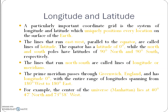Longitude and latitude is one of the most important representations of a grid. A particularly important coordinate grid system is longitude and latitude, which uniquely positions every location on the surface of the Earth. If I want to pinpoint any location exactly and uniquely, I need to use longitude and latitude.